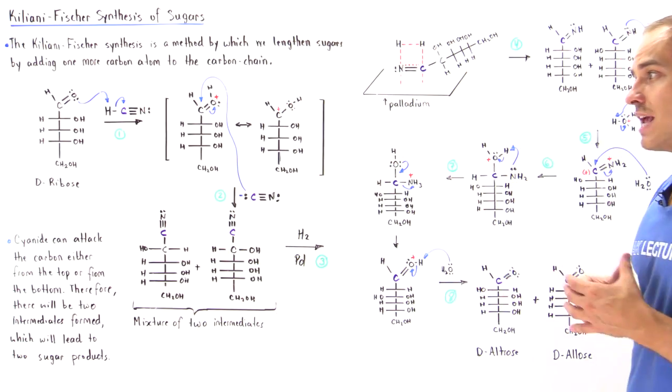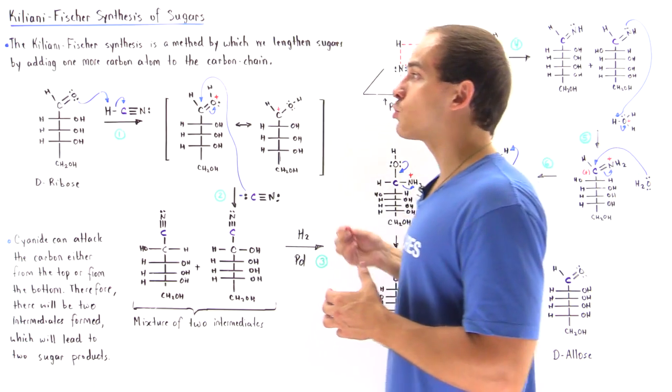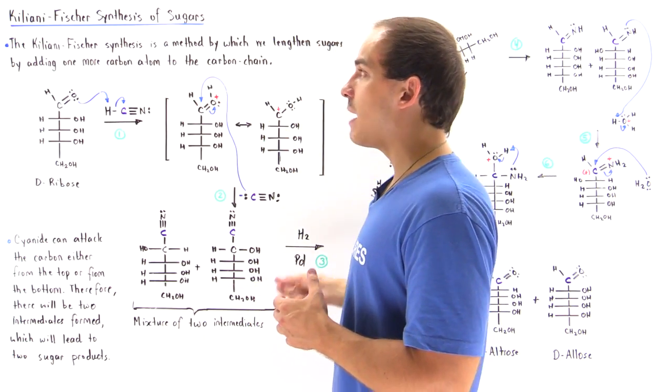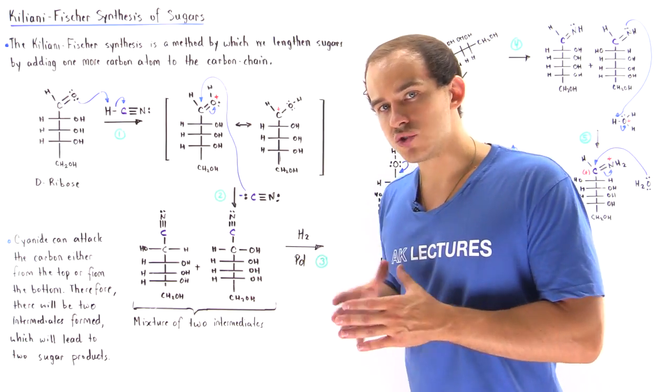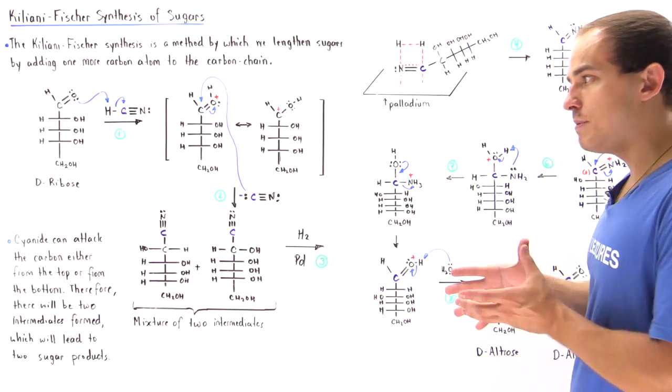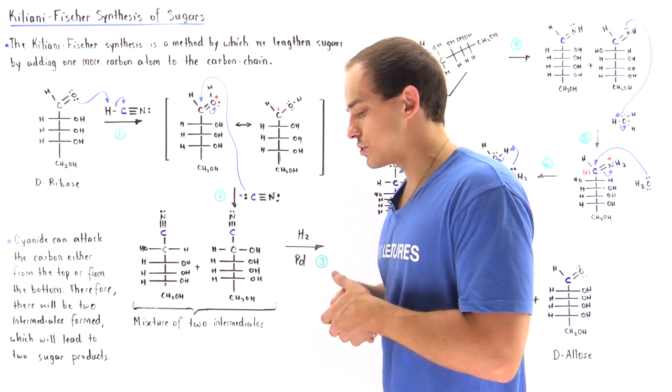we know once the reaction takes place, we have to increase the carbon chain by one carbon. So we go from an aldopentose to an aldohexose. The product sugar should be an aldohexose.